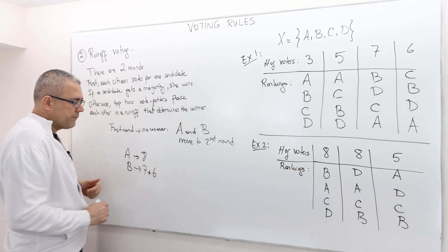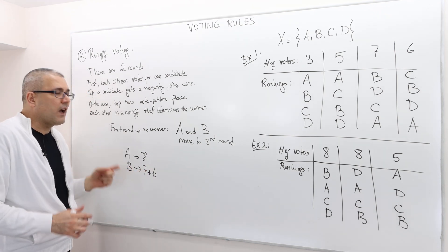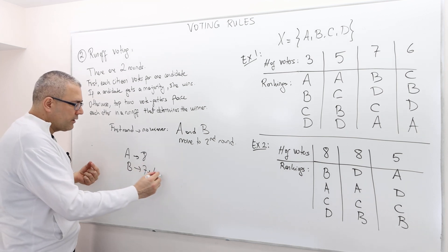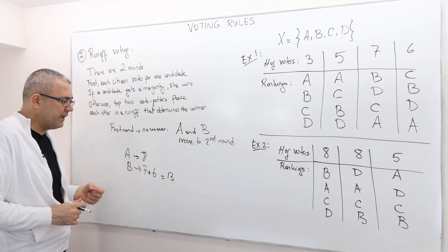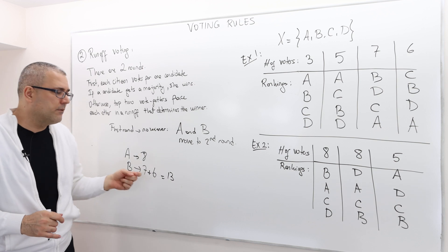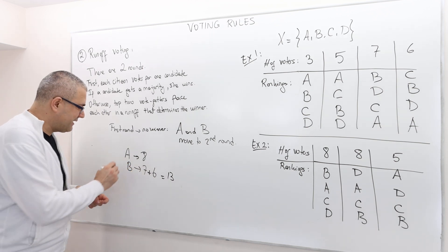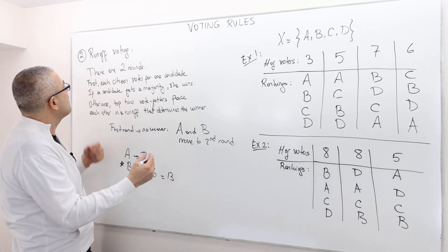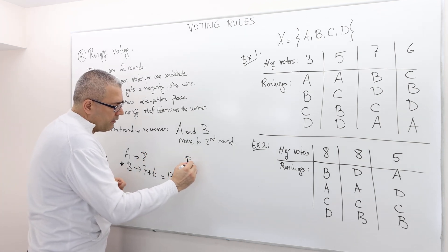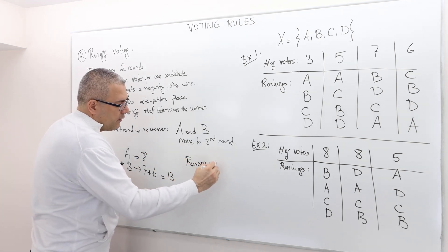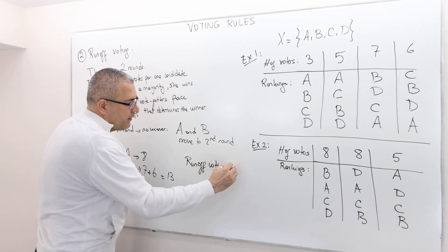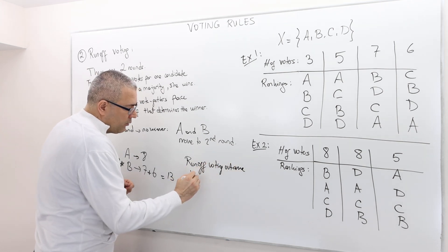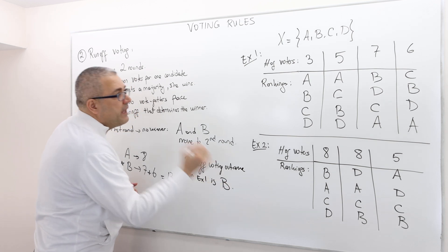Six more voters are going to vote for B. So therefore, it's going to be 13. Is there any majority winner? Yes, it is the candidate B. So according to runoff voting, the outcome in example one is B.